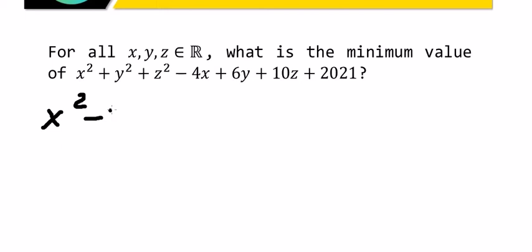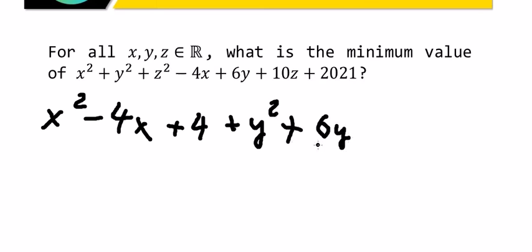square minus 4x. In this situation, we need to have positive number 4. Next we have y square plus 6y. In this situation we have number 2 and we have number 3